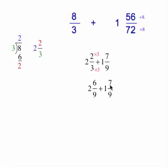So 2 and 6 ninths plus 1 and 7 ninths. Then I'm going to add the 6 and the 7. It's going to give me 13 ninths. And then I'm going to add the whole numbers, 1 and 2.